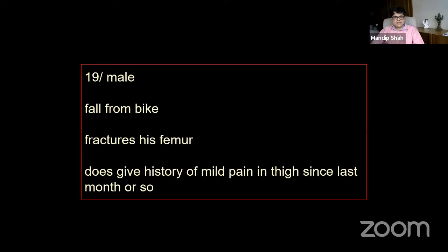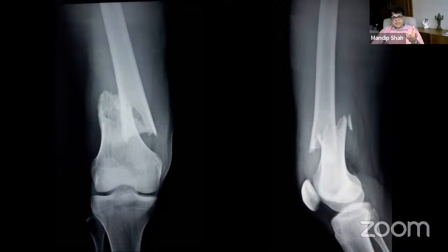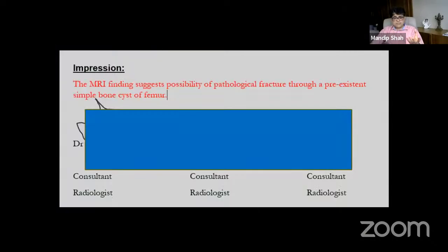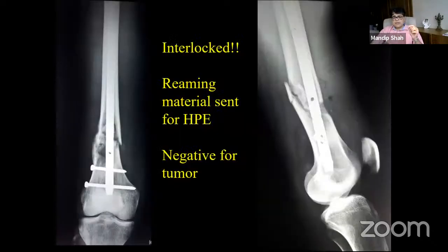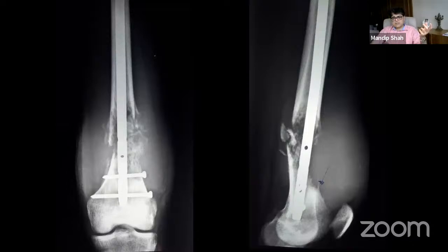This 19-year-old male fell from a bike and fractured his femur, with a history of mild pain in the thigh for the past month. His x-ray showed fracture ends that were hazy — it looked like something was going on before the fracture. An MRI reported it as a simple bone cyst that had fractured, so he underwent nailing. The rimming material sent for histopathology was negative for tumors. But this patient presented to us as a high-grade osteosarcoma — he needed a total tumor replacement because the entire canal had been contaminated.